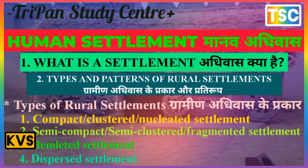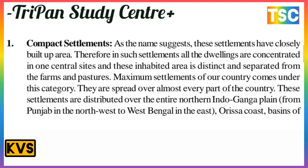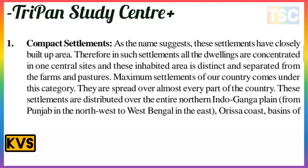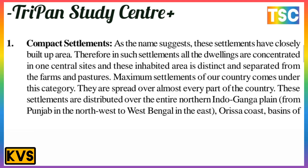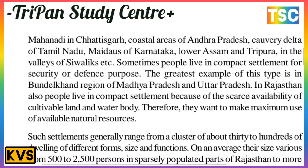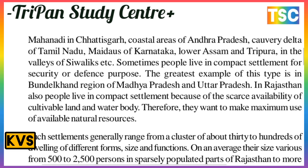First, let us discuss compact settlement. As the name suggests, this settlement has a closely built-up area. All dwellings are concentrated in one central site, and the inhabited area is restricted and separate from the farm and pasture. The maximum settlements in our country come under this category and are spread over almost every part of the country. These settlements are distributed over the entire north — the Indo-Gangetic plain from Punjab in the northwest to West Bengal in the east — and the coastal and basin regions of Mahanadi in Chhattisgarh, coastal areas of Andhra Pradesh, the delta of Tamil Nadu, lower Assam, Tripura, and the valleys of Shivalik.